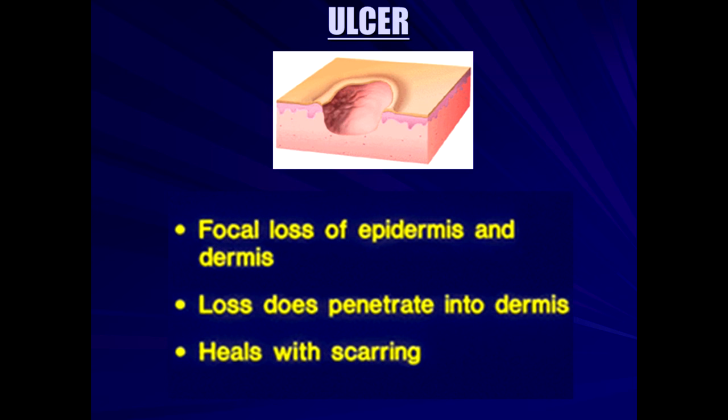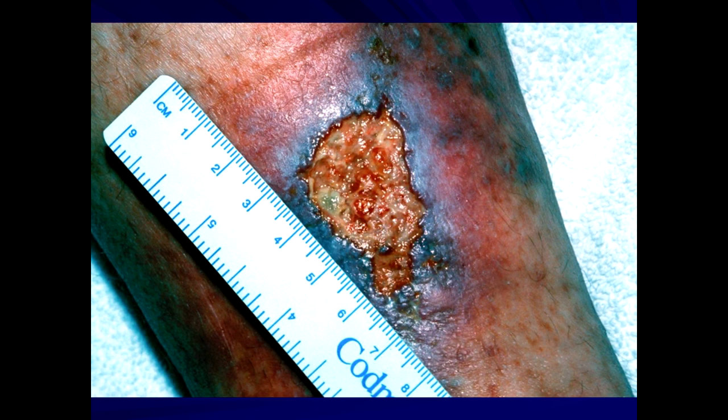Moving on to systemic manifestations — this is, of course, an ulcer. Ulcers may be well-circumscribed or poorly circumscribed. The differential for lower extremity ulcers is broad: you can have hypertensive ulcers, diabetic-related ulcers with poor circulation, trauma-induced ulceration, or ulceration as a result of systemic disease, which we'll discuss shortly.